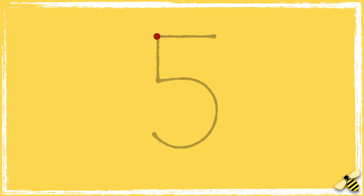Let's have a go at writing the number 5. Straight down, and then around. And then a straight line along the top.